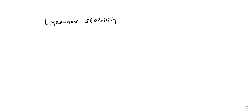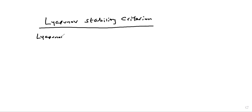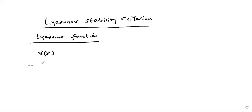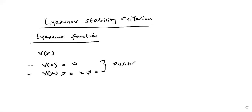For the Lyapunov stability criterion, we first define a Lyapunov function. Given a function V(x), it is said to be a Lyapunov function if it meets the following properties. Property one: V(0) = 0. Property two: V(x) > 0 for all values of x not equal to zero. These two properties are the properties of a positive definite function.